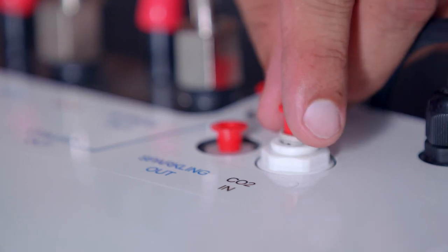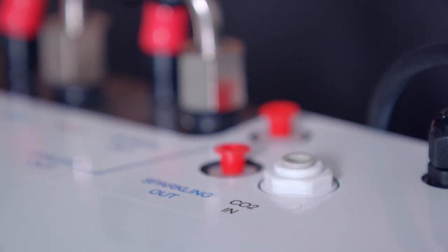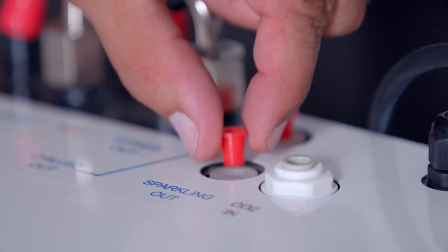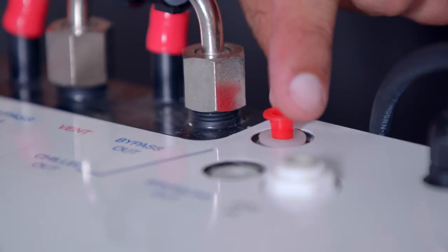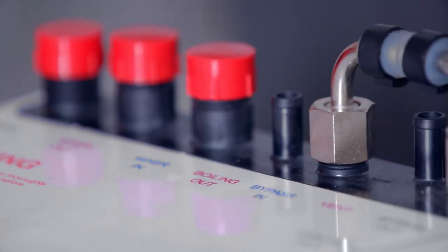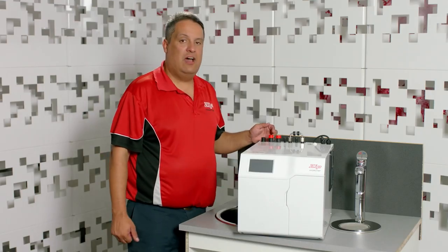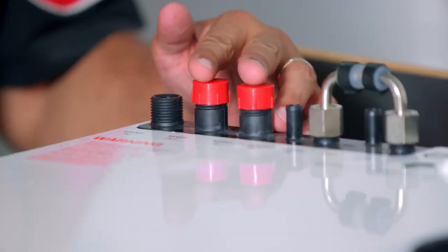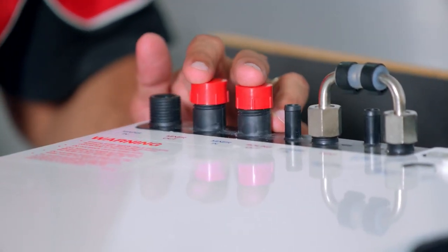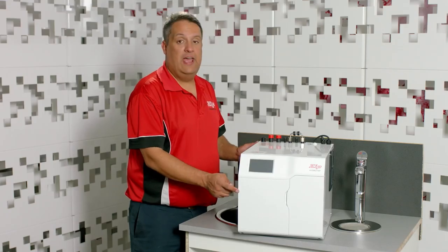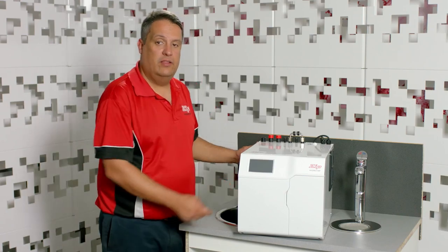Before we install the unit under the sink, we need to remove the little dust caps out of all the outlets. Also remove the mains in. Mixer out and mixer in are not required, so just leave the dust caps on. The unit now is ready to be installed under the bench.